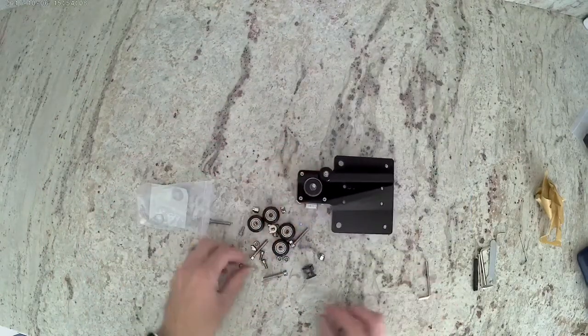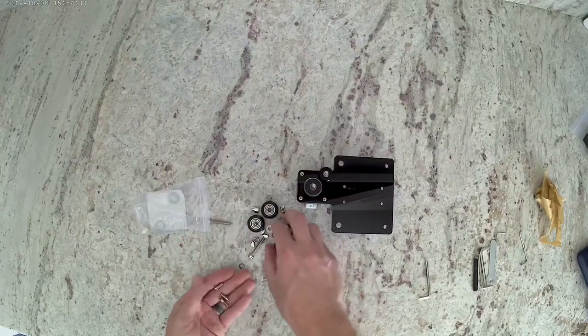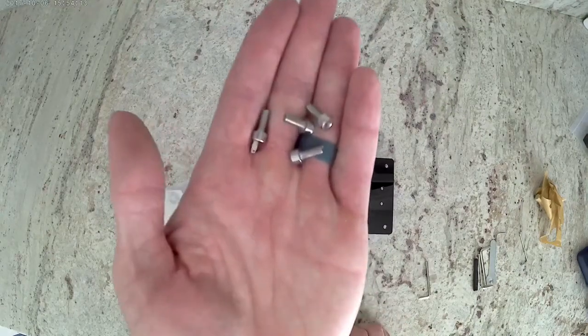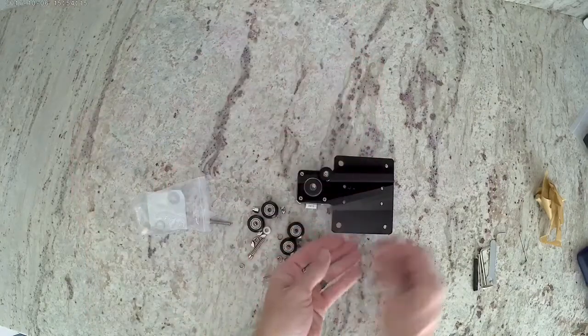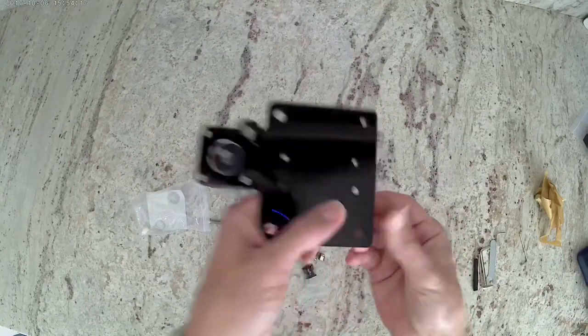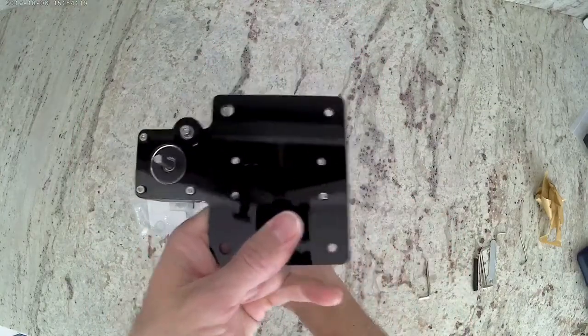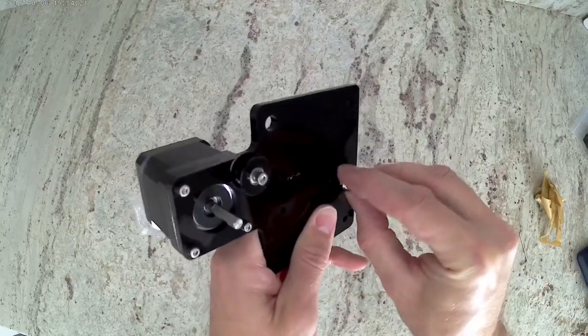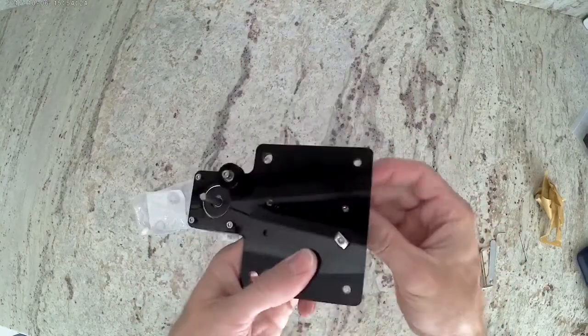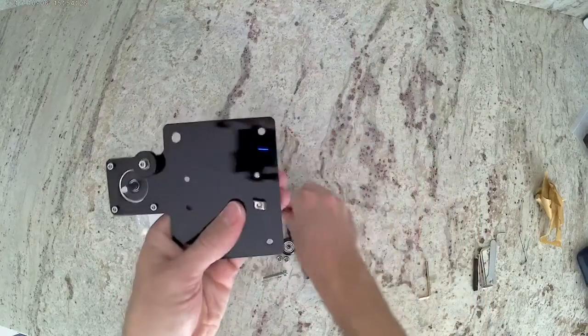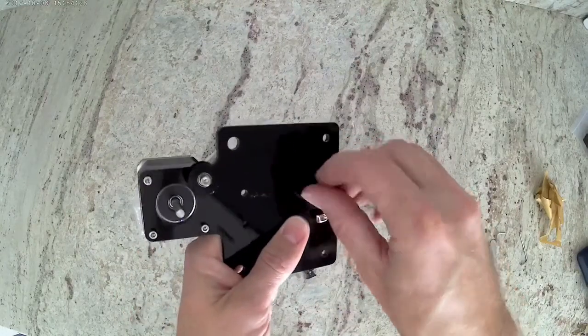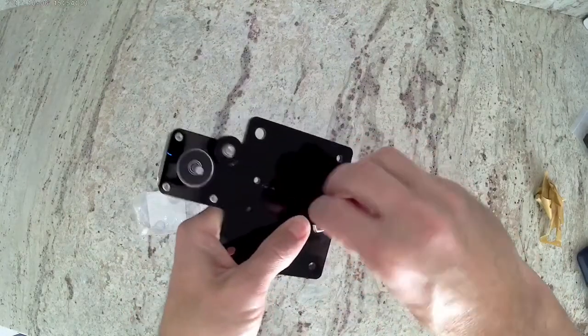Now go ahead and grab four of the shorter M4 bolts, and make sure to install them through the backside that the motor enters through, just like shown in the video. Grab a T-nut and install it just a couple threads on the bolt though. We're going to tighten them down later. Do that for all four of these bolt holes.